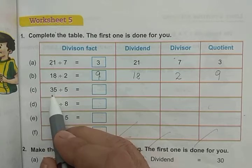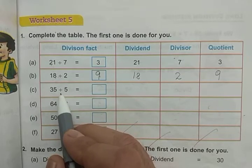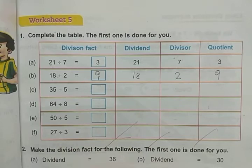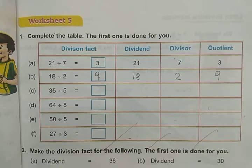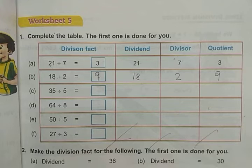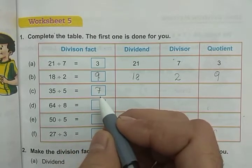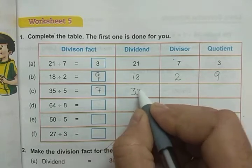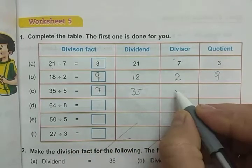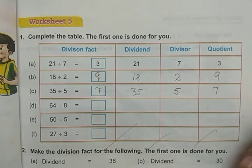Next: 35 divided by 5. So 35 is our dividend. We have to divide by 5, so 5 is our divisor. Let us divide by reciting the table of 5: 5 ones are 5, 5 twos are 10, up to 5 sevens are 35. So the result is 7, which is our quotient. We write dividend = 35, divisor = 5, and quotient = 7.